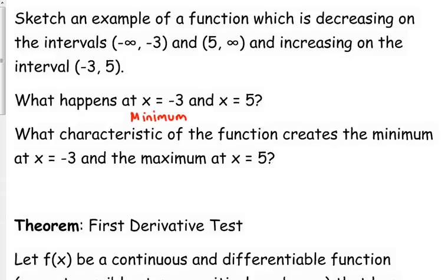At positive 5, what do we have? We've got a maximum. What I'm asking about: the function creates the minimum at negative 3 and the maximum at x equals 5. That change from decreasing to increasing creates a minimum. Decreasing to increasing creates a minimum; increasing to decreasing creates a maximum.